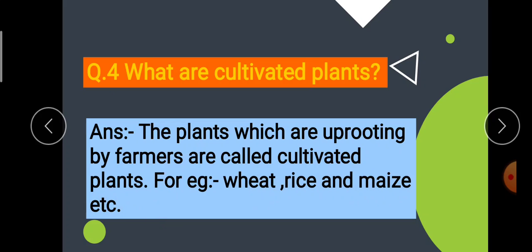कि जो plants farmers के द्वारा उगाए जाते हैं, उनको बोलते हैं cultivated plants. For example है, wheat, rice, maize, etc. ये जो plants हैं, इनको farmers अपने खेतों में उगाते हैं और इनको क्या बोलते हैं? Cultivated plants.